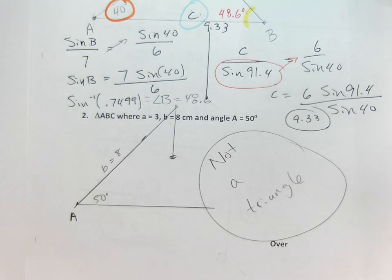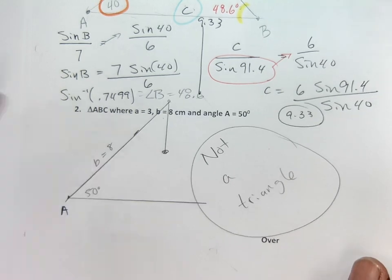So if it's not a triangle, then we can't solve it. We're done. It's not a triangle. We're not going to solve something that's not a triangle. So we're finished.